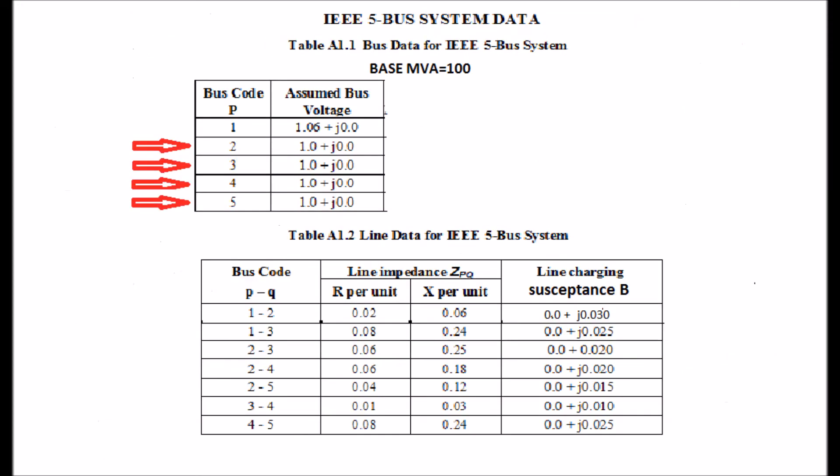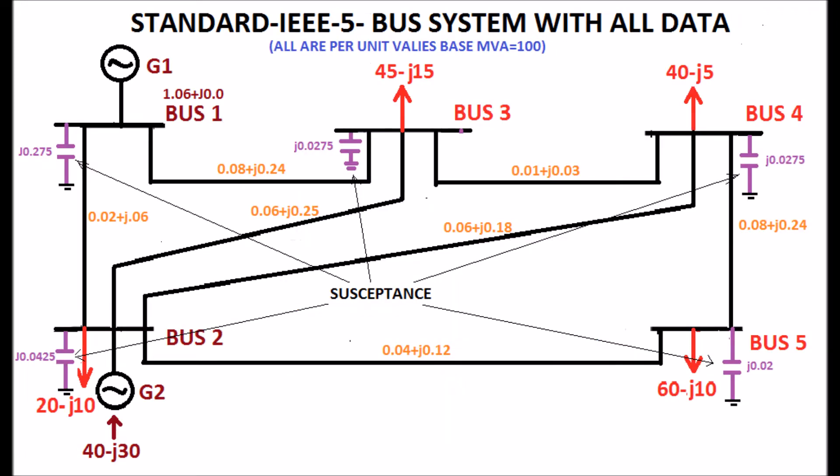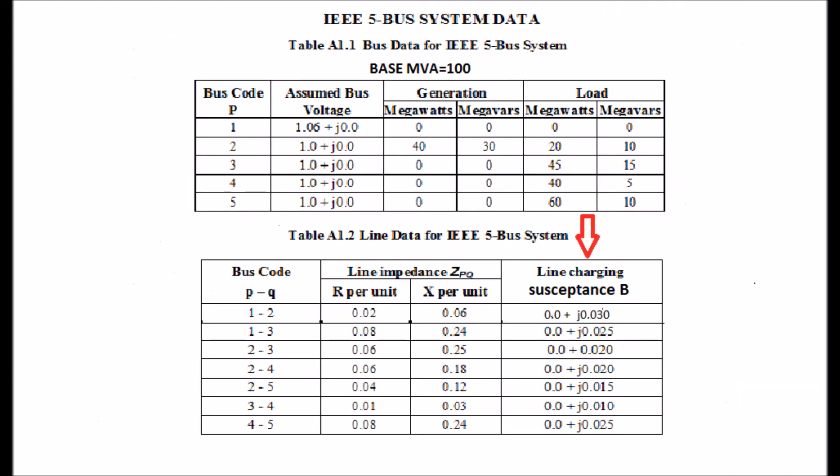The assumed initial voltages are shown in Table A1.1. Line charging susceptances are marked in each bus. The values are calculated from the susceptance given in Table A1.2.